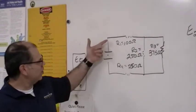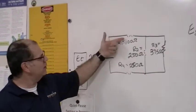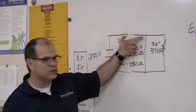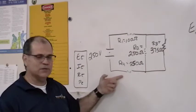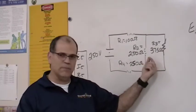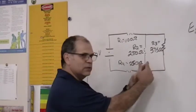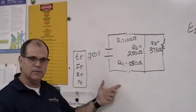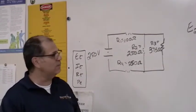So, whatever comes into the circuit has to come out of the circuit. So, the current combined between these two components is the same as the current that goes through 1 and 4. That's the rules for a series circuit.